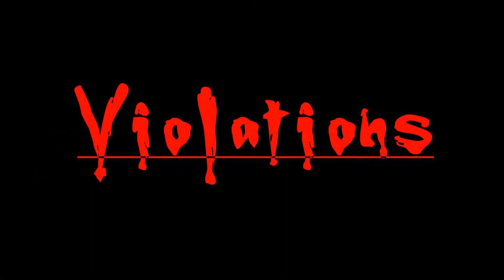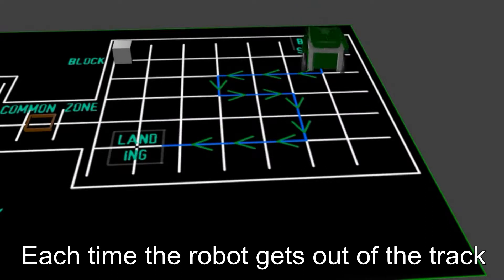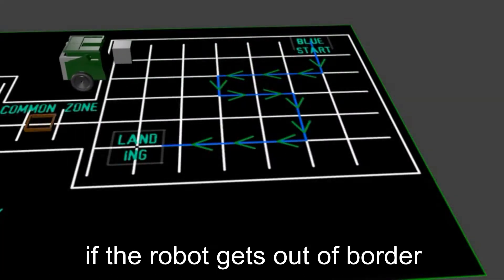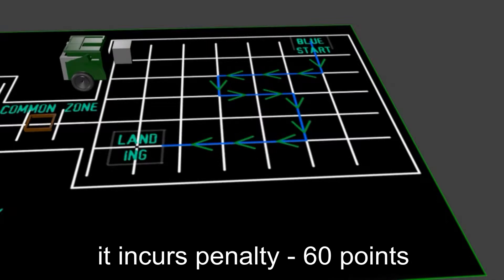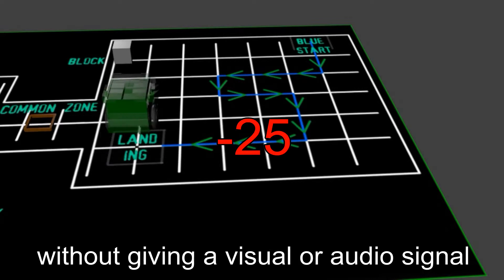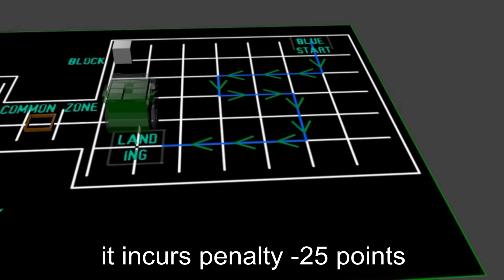The violations: Each time the robot gets out of the track, it incurs minus 10 points. If the robot gets out of order, it incurs penalty minus 60 points. If the robot crosses the block node without giving a visual or audio signal, it incurs penalty minus 25 points.